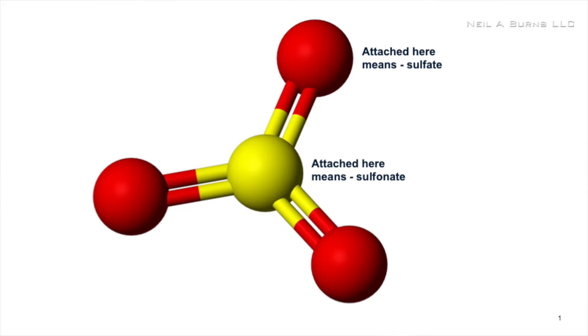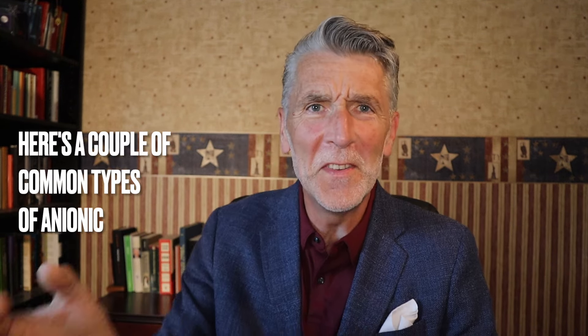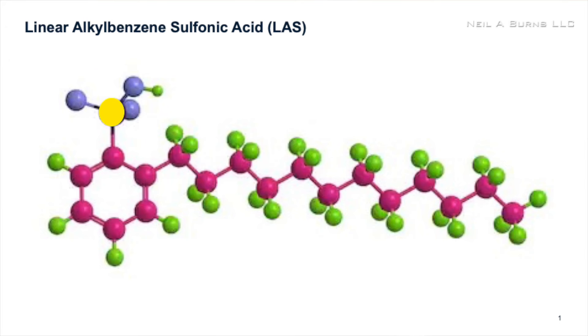The most common types of anionics are sulfonates or sulfates, made by attaching an SO3 group hydrophilic head to the hydrophobic tail, if you remember our tadpole motif. If the SO3 is connected via the sulfur atom, that's known as a sulfonate. And if the connection is via the oxygen atom, an ether linkage, that's known as a sulfate. So maybe the way to remember it is if the sulfur is on the hydrophobe, then that's a sulfonate.